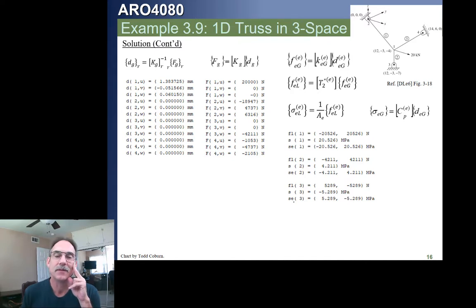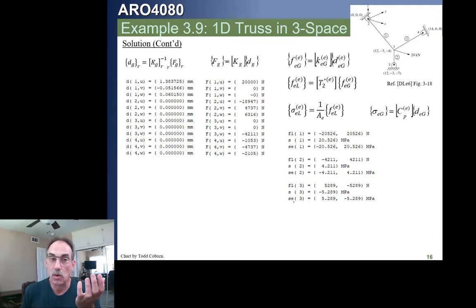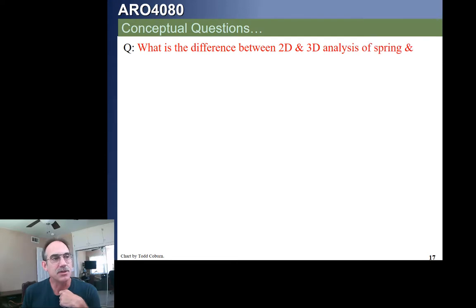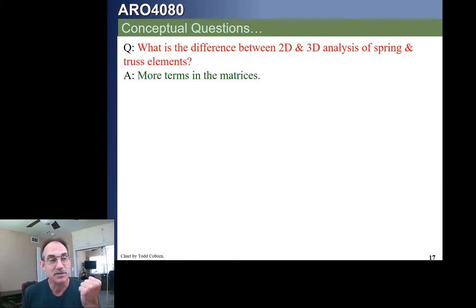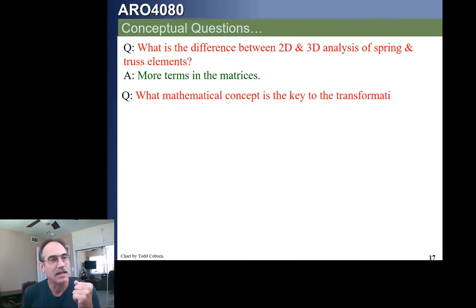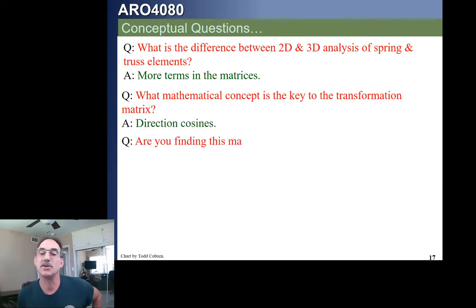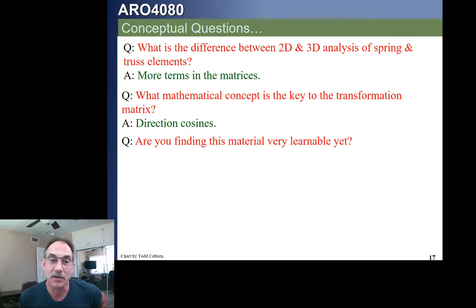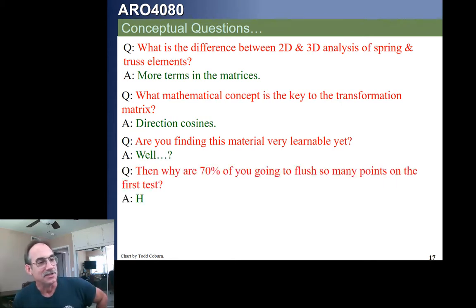Let's look at some conceptual questions. What is the difference between a 2D and a 3D analysis of spring and truss elements? All it is is more terms in the matrix — there's really no fundamental difference. What mathematical concept is key to transforming our matrix? It's direction cosines, which give us our transformation matrix. Hopefully you're finding this material very learnable at this point.